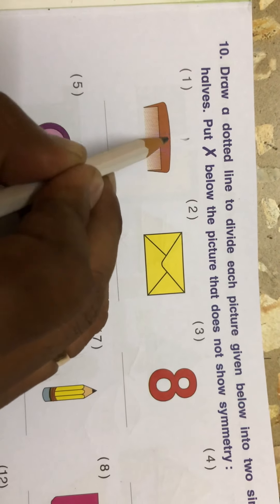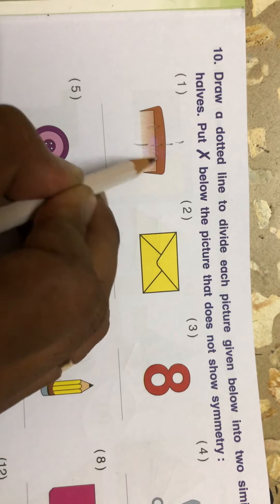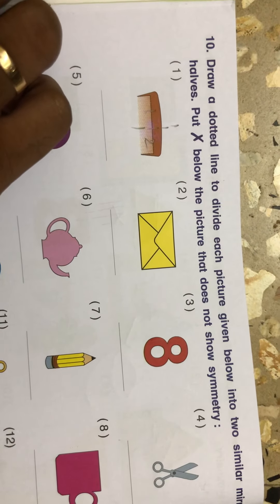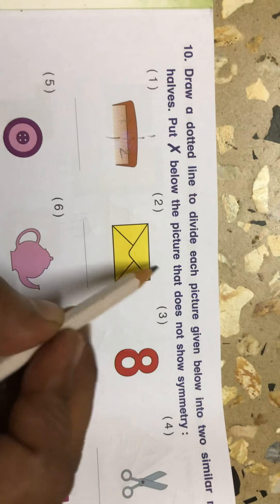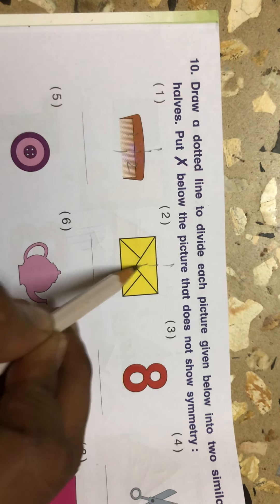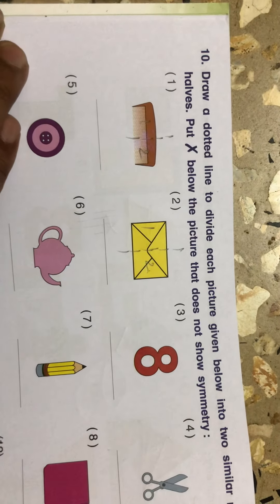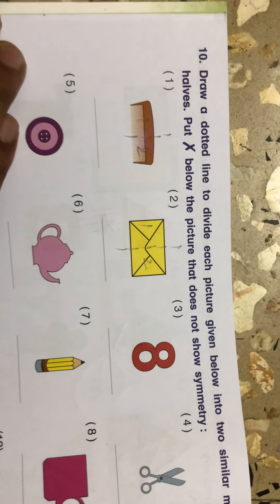Now see, first comb is given. If I divide it from here, see, I can divide it into two equal parts, one and two. It is symmetrical. Same here, this envelope. So we are dividing it into two equal parts. Both are same.